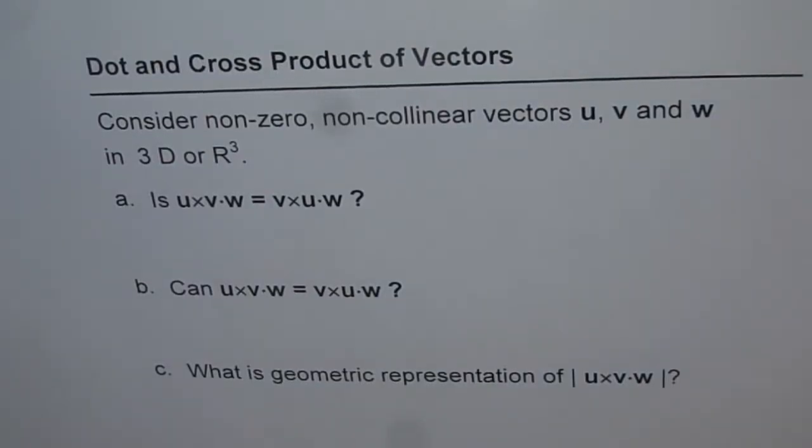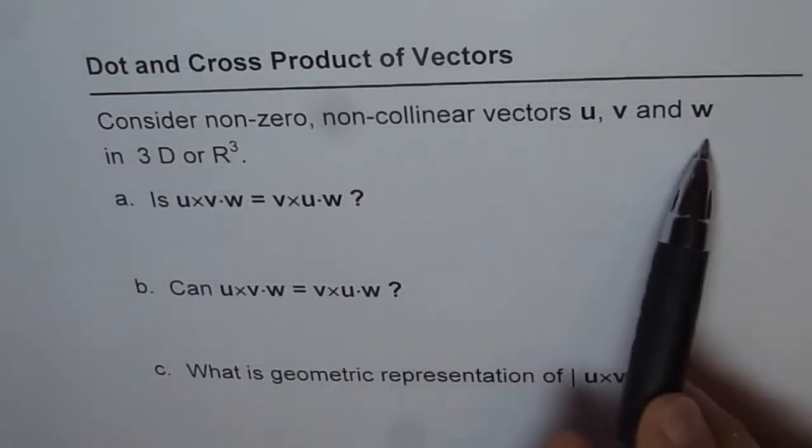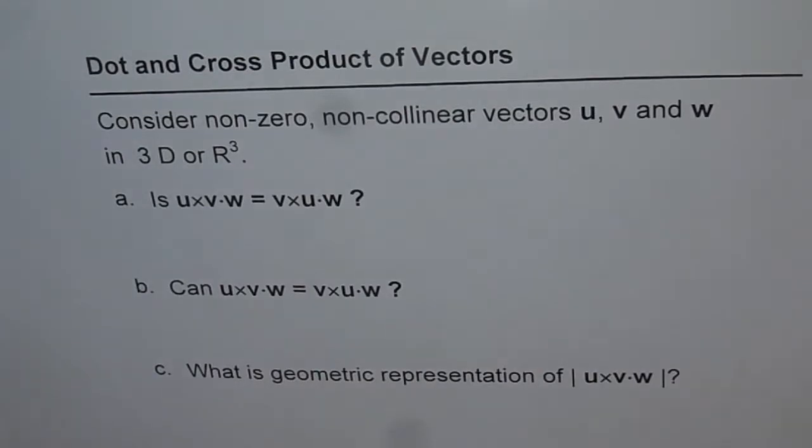Dot and cross product of vectors. Now in this exercise, we are considering triple product where we have dot and cross product combination. It says, consider non-zero, non-collinear vectors u, v and w in R3 or 3D space.